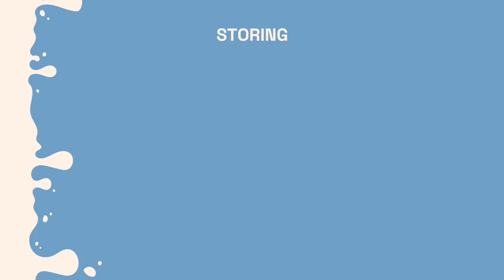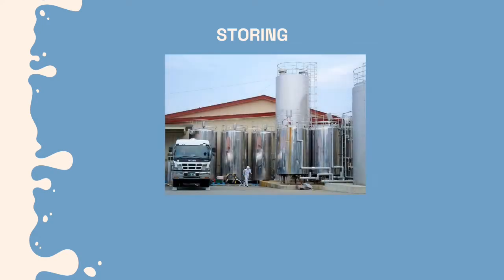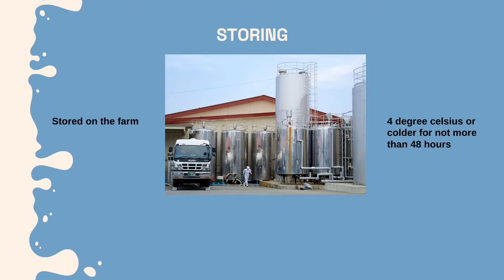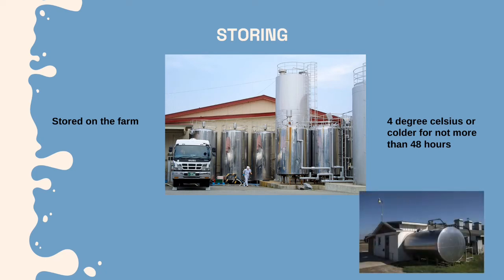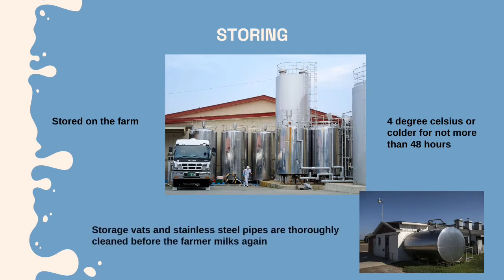As for the storing stage, milk storage vats or silos are refrigerated and come in various shapes and sizes. Milk is usually stored on the farm at 4 degrees Celsius, or colder, for no more than 48 hours. Vats and silos are agitated to make sure the entire volume remains cold and that the milk fat does not separate from the milk. After milk has been collected, storage vats and stainless steel pipes are thoroughly cleaned before the farmer milks again.